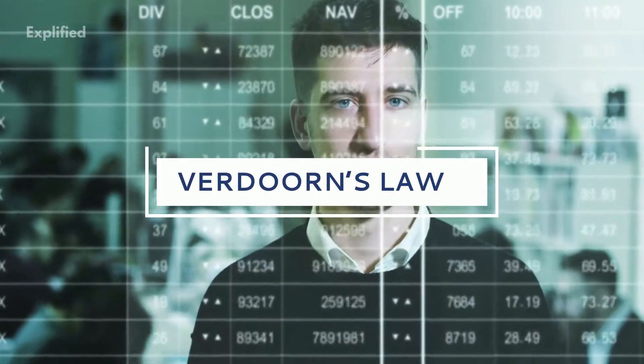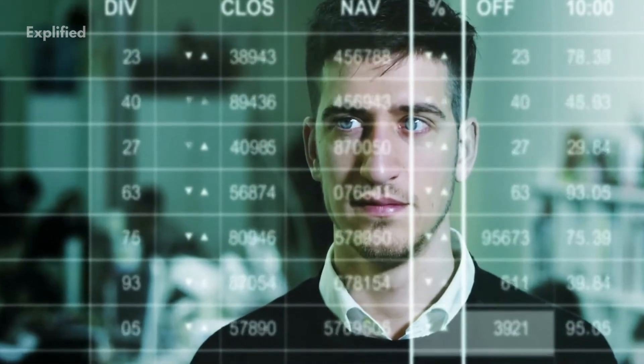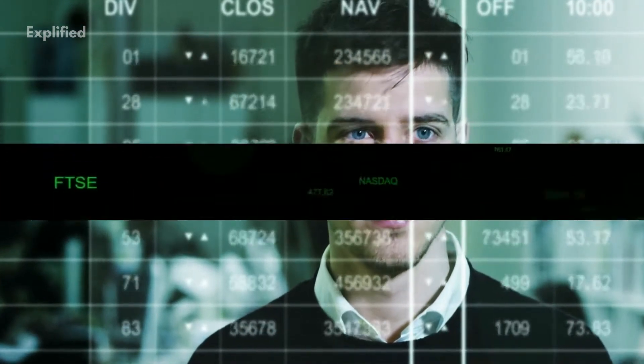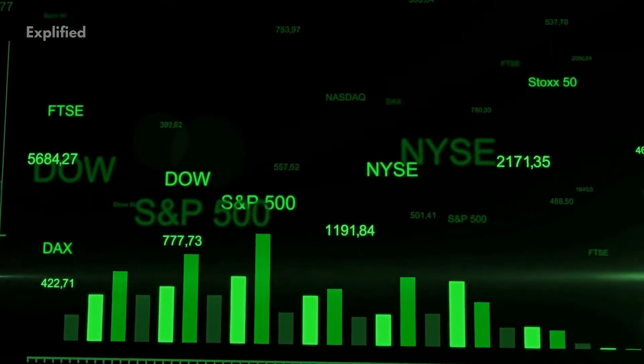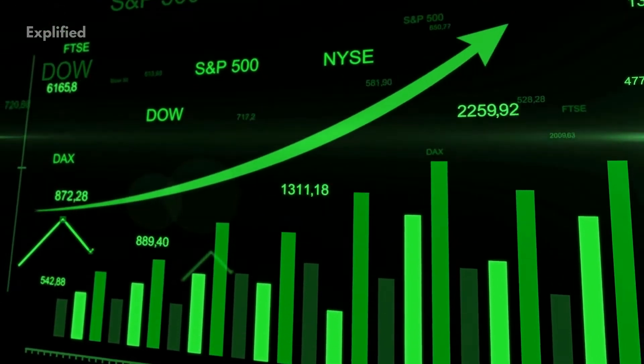Verdoorn's law states that in the long run, productivity generally grows proportionally to the square root of output. As a result, in the presence of increasing returns, faster growth in output results in faster growth in productivity.